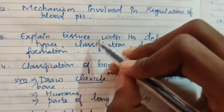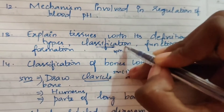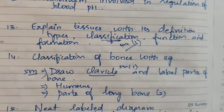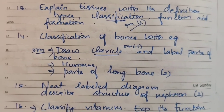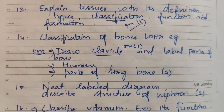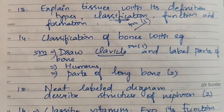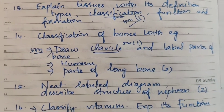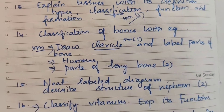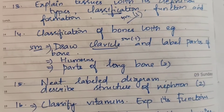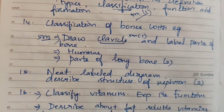Bone-related topics: cross section of bone for 5 marks; classification of bone appearing multiple times; and parts of the long bone appearing 2 times as 15-mark questions.